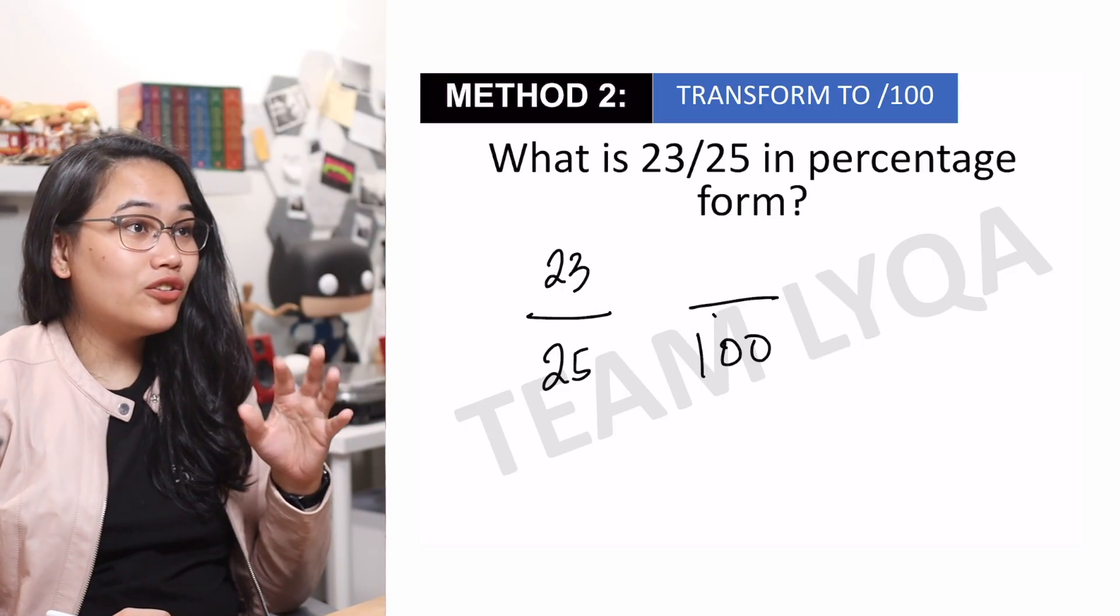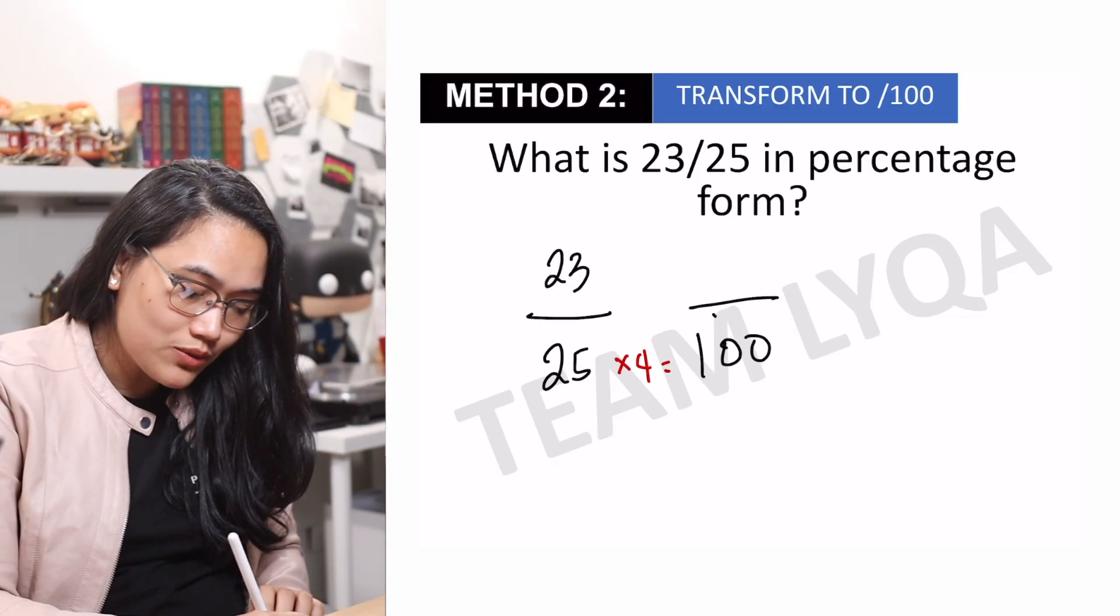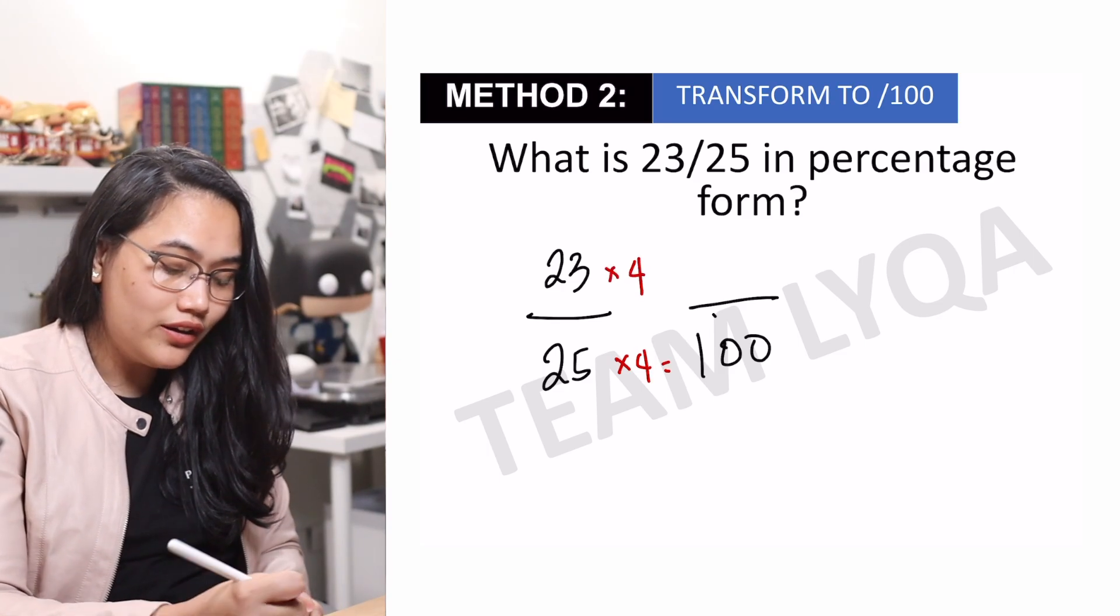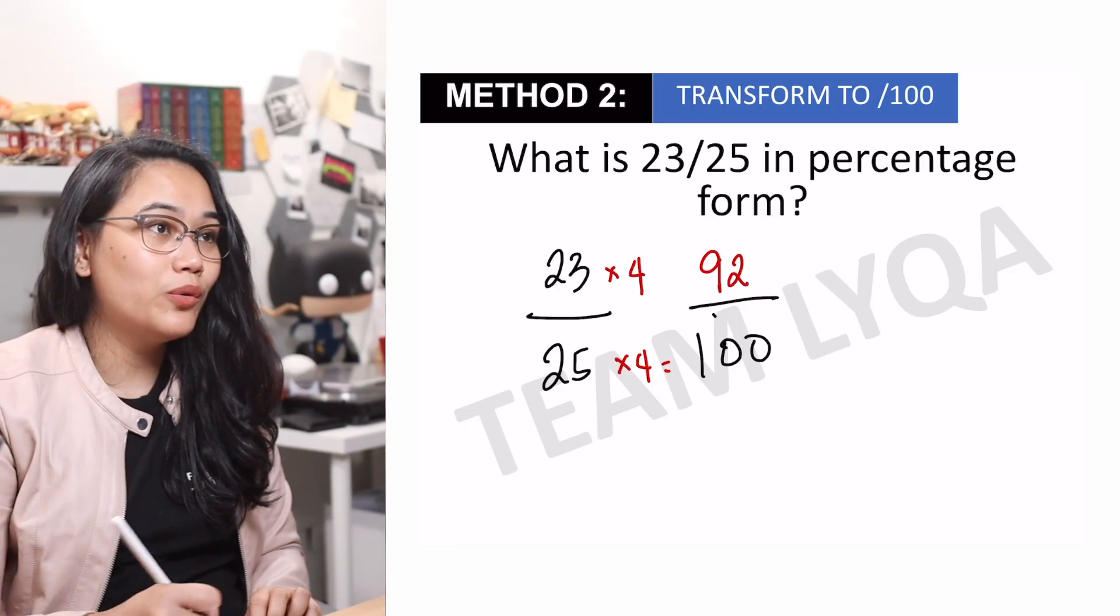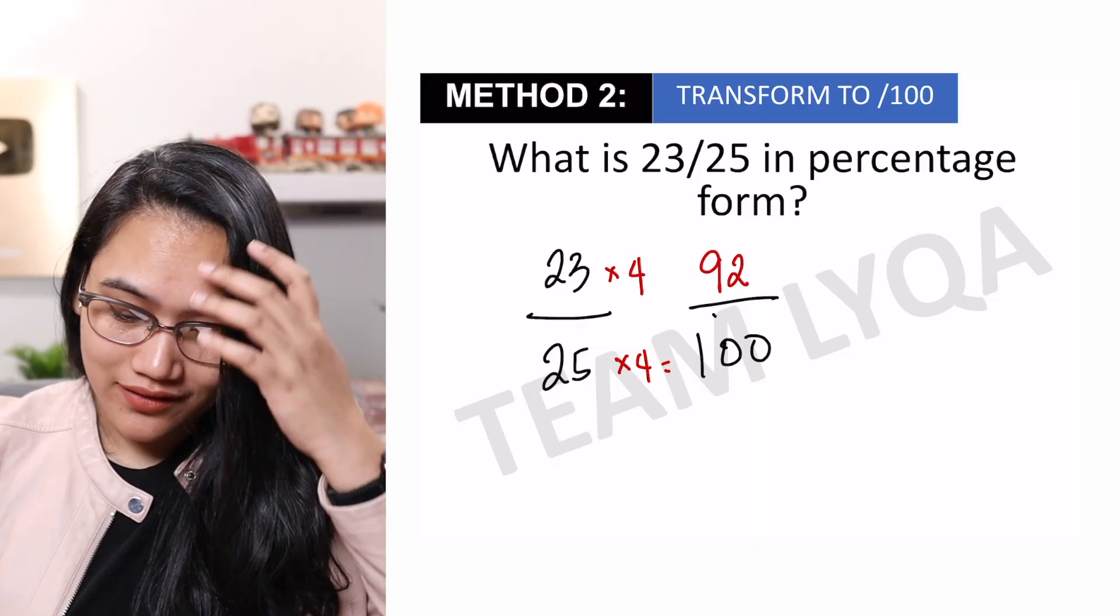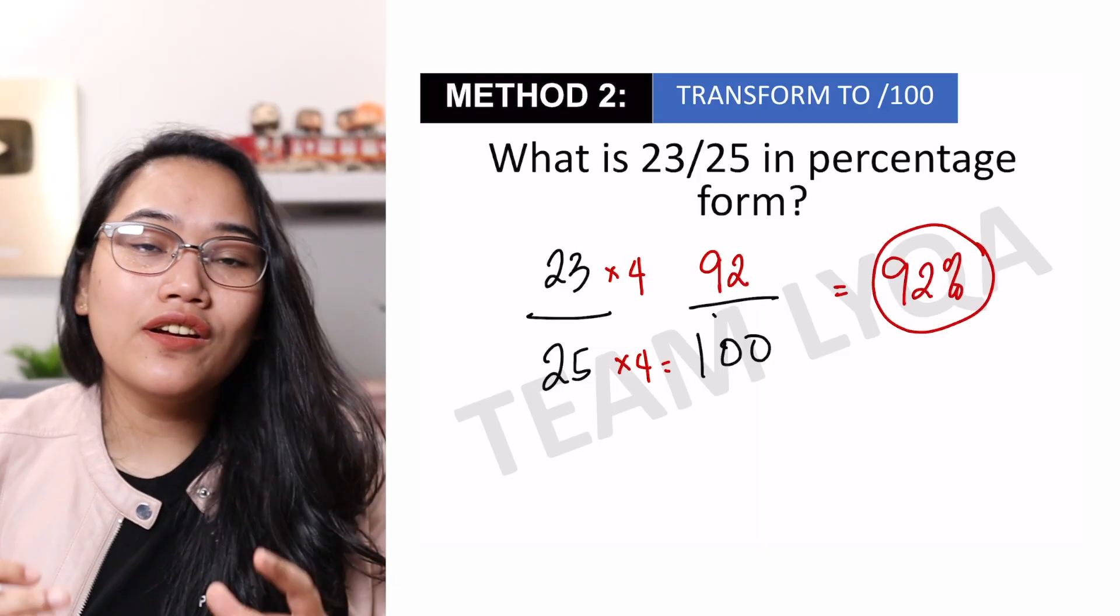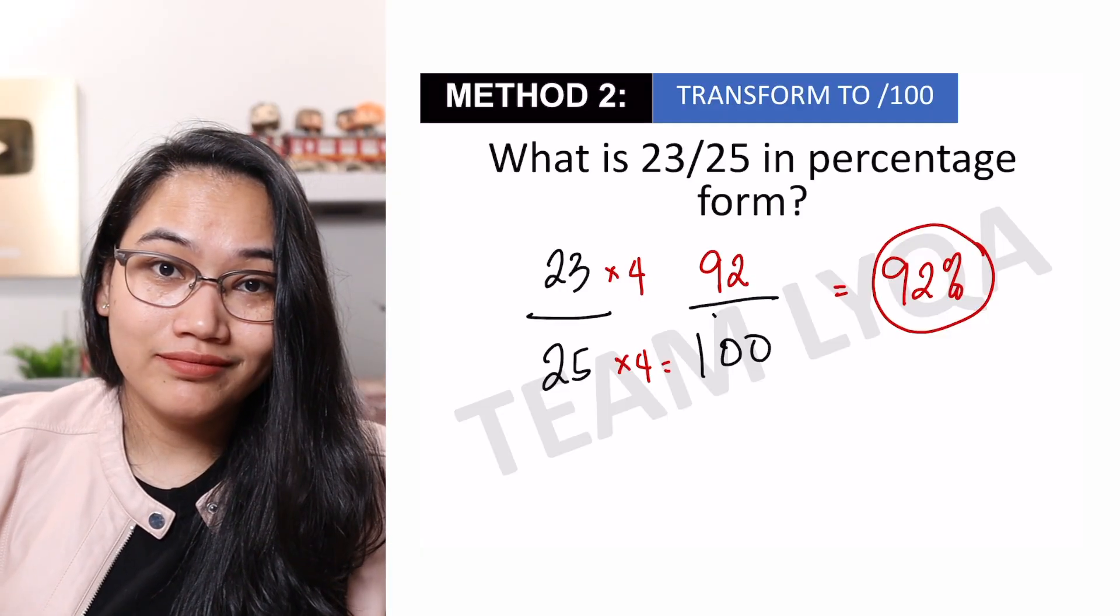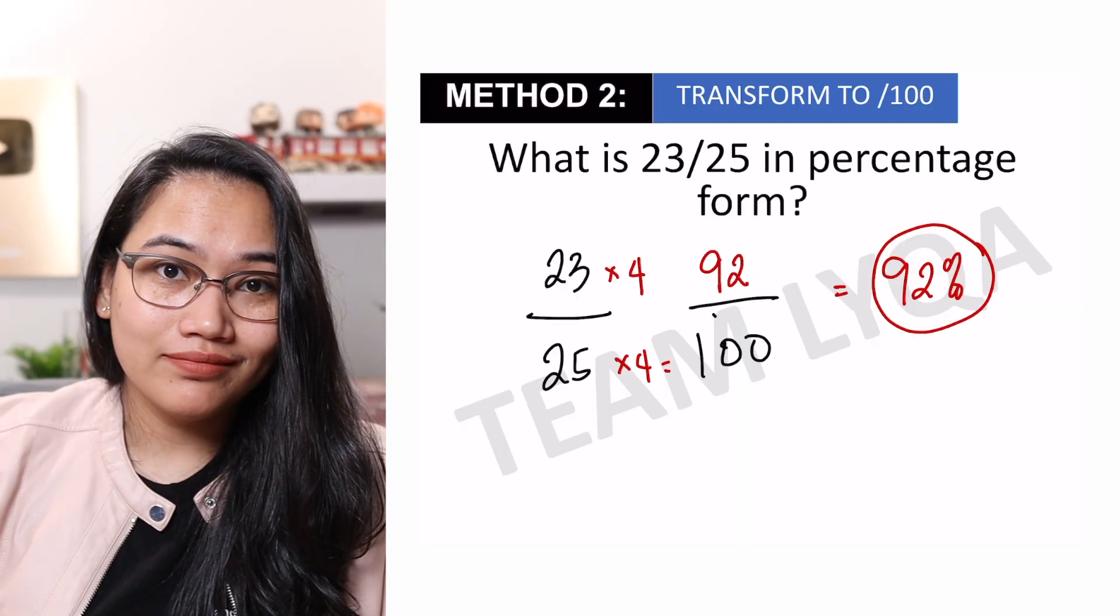Titila natin yung 25 which is the denominator, yun na nagdidikta kung pwede mong i-convert sya into over 100 or i-transform yung fraction. Again, may video tayo on transforming fractions. Pero, 25 kasi times 4 is 100. So, para makuha ko yung nasa taas, imumultiply ko lang din sya sa 4 and that would give me 92 over 100 which dahil nga alam natin na ang over 100 ay percent, that is just 92%. Kasi kahit ano ng fraction na may over 100, kung ano man yung number na nasa taas, yun na yung percentage niya. 92 over 100, 92%. 8 over 100, 8%.